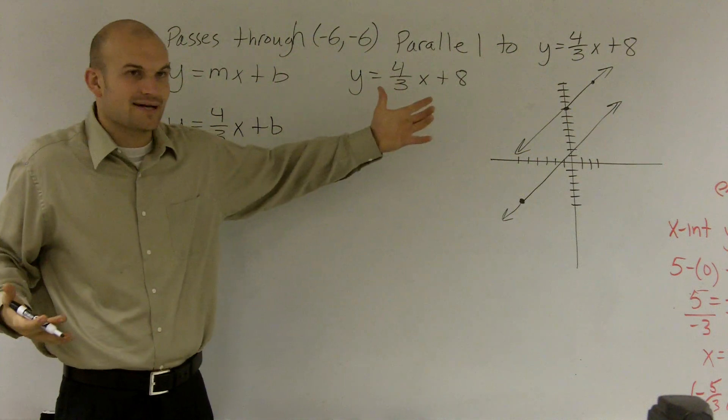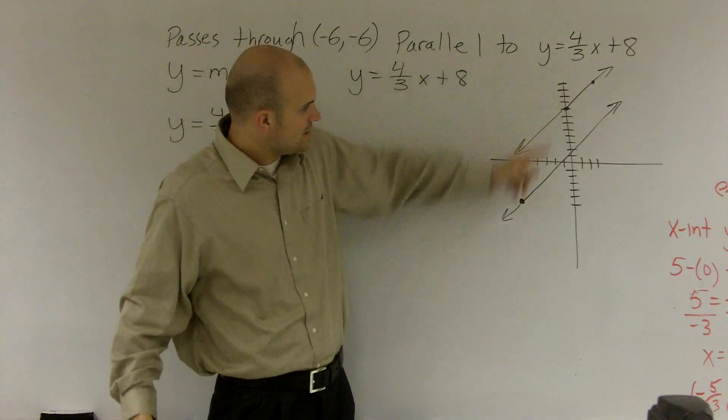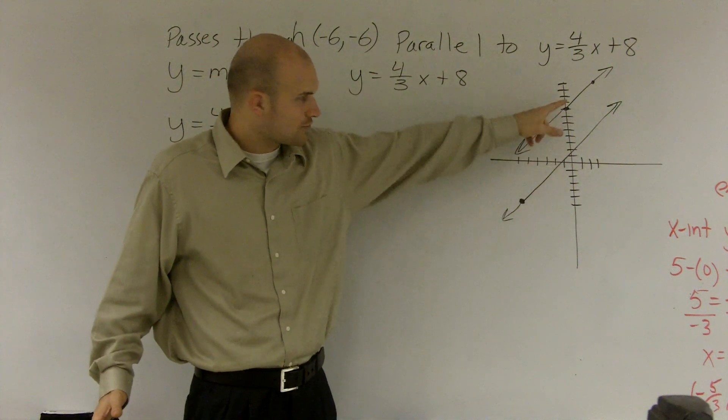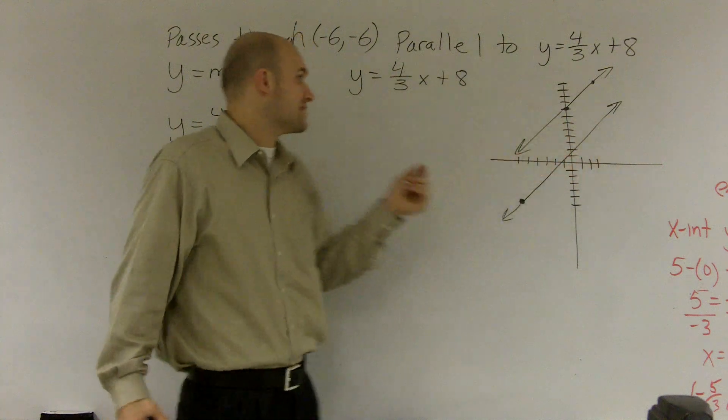Now, why didn't I write 8? Well guys, this is crossing at 8. Do you notice that it goes through this point? Like I said, I just sketched this graph. It can't go through 8 again. It's going to have a new y-intercept, which is b.